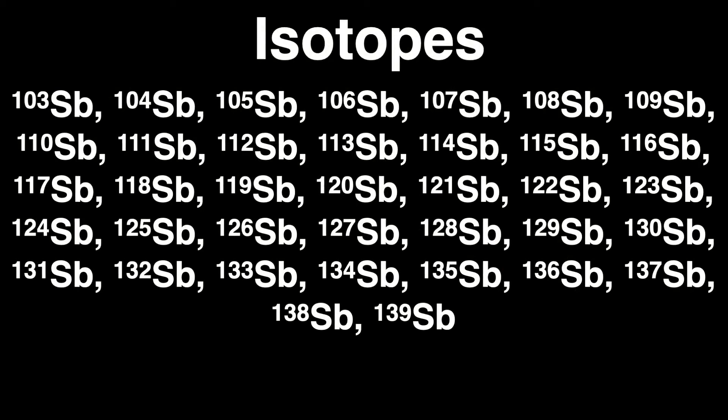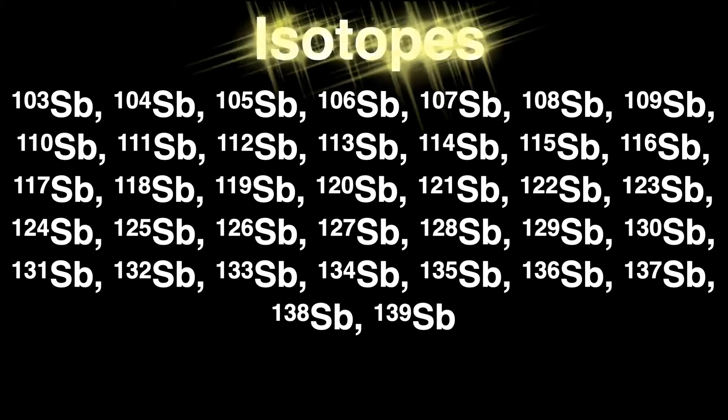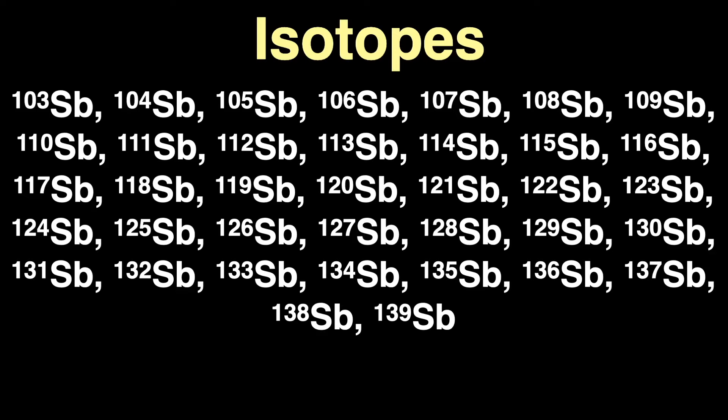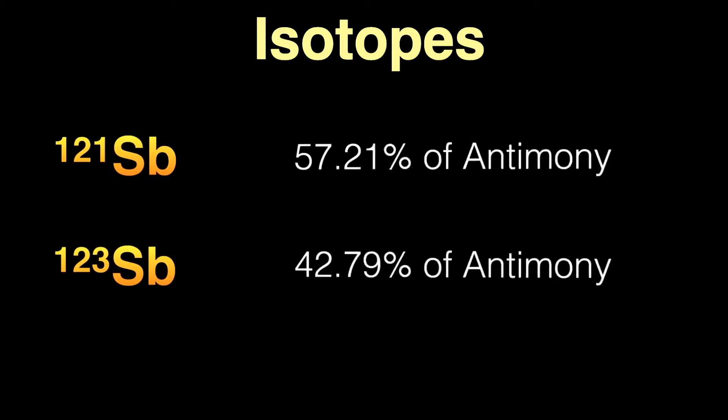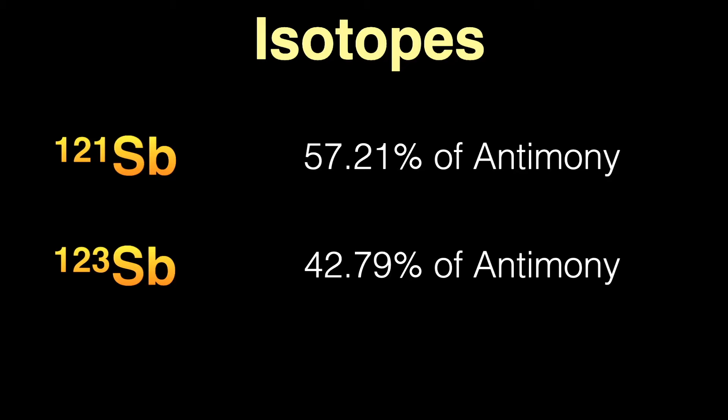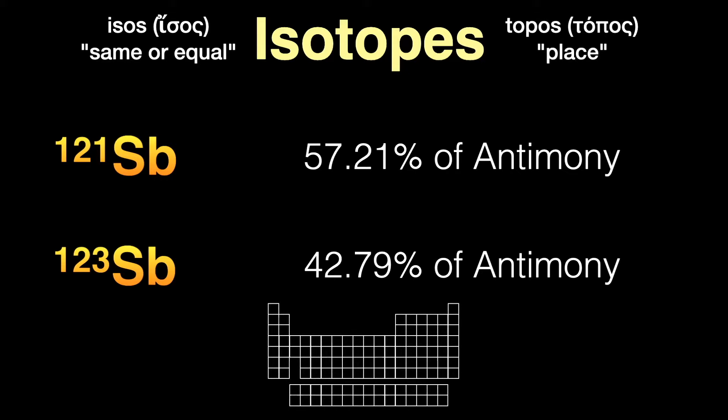Each element has many different forms. For each specific element, the number of protons in the nucleus is the same, 51 protons for antimony, but there can be different numbers of neutrons in the nucleus. All these different forms, called isotopes, are chemically identical to each other, but with slightly different weights. The number you see next to the chemical symbol is the total number of protons and neutrons in the nucleus. There are 37 isotopes of antimony, and of these, there are only two stable, non-radioactive isotopes. These two stable isotopes are found in almost equal proportions in nature. By the way, the word isotope comes from the Greek word isos, meaning same or equal, and topos, meaning place, since all these various forms of antimony occupy the same place in the periodic table.